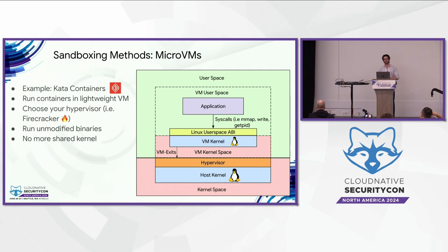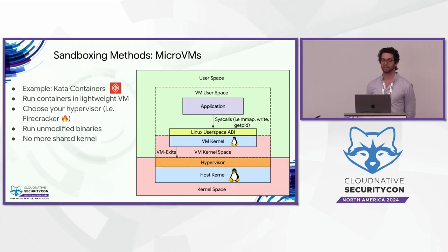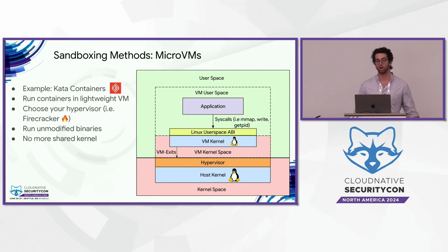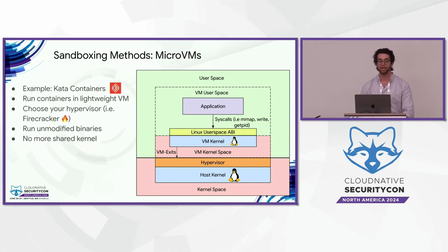The most popular implementation of the micro VM approach is Kata. Firecracker is also really popular — it's a hypervisor created with a focus on making this approach as performant and lightweight as possible. The idea is you take each of your pods and run them in their own VM. The isolation comes from the fact that you're no longer sharing the host kernel across all your containers — any exploit or breakout is isolated and jailed in that micro VM.